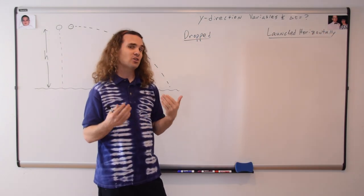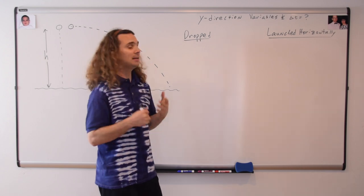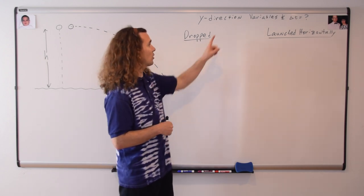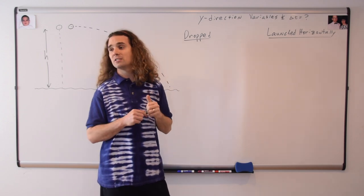The basic idea here is that we need to solve for the changes in time for both bullets. And in order to do that, we need to list the variables that we know in the y direction for both cases. Bo, could you please begin doing that?